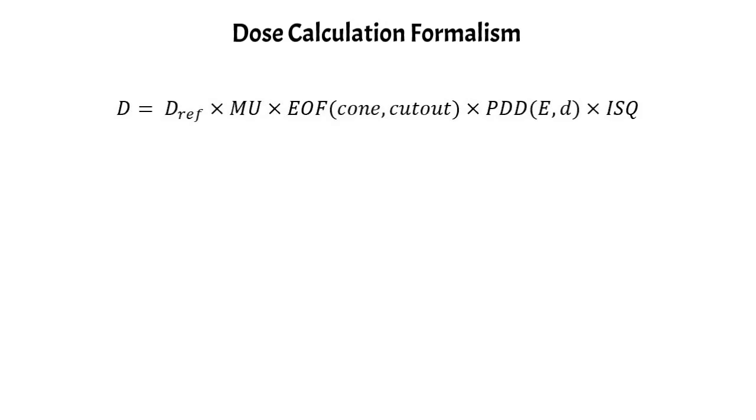But rather than scatter factors here, we have the electron output factor, but everything else is similar. We don't have anything like a tray factor or wedge because we would never use a wedge.